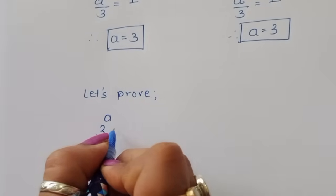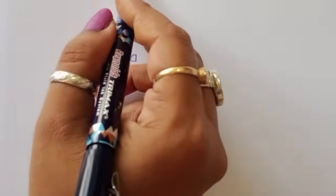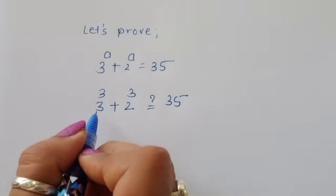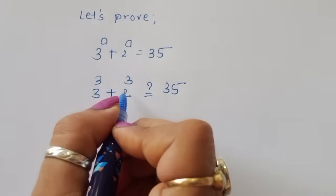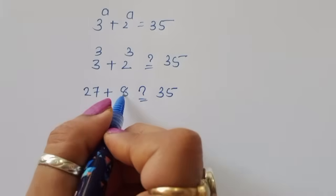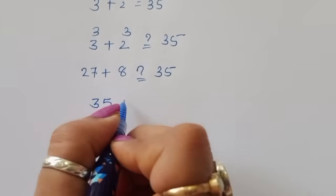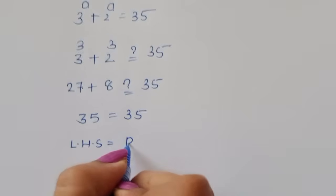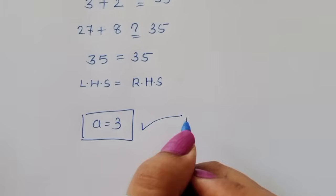Let's verify: 3^A + 2^A = 35 with A = 3. So 3³ + 2³ = 27 + 8 = 35. LHS equals RHS, so A = 3 is the correct solution.